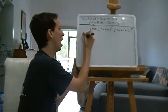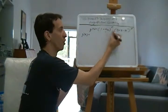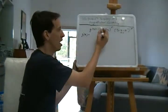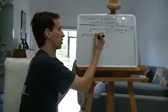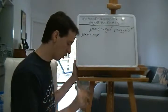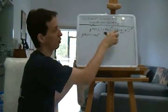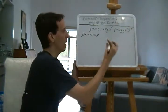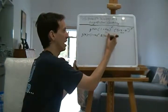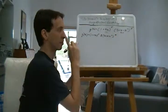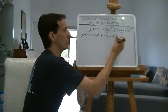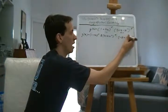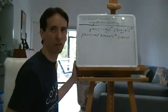So g prime of x: we have the first and the second. The first is (1 plus 4x) to the fifth — that doesn't change — times the derivative of the second. We need to use the chain rule. The chain rule gives us: 8 times the inner, (3 plus x minus x squared) to the seventh, times the derivative of the inner, which is negative 2x plus 1, from the power rule.